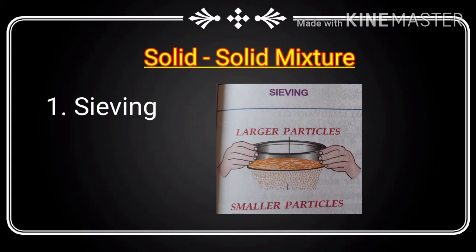The large-sized particles are separated from the fine particles by passing the mixture through a sieve. A sieve has a wooden frame with a metal mesh at its base. The mixture is added from the top of the sieve; larger particles stay above and fine particles collect below when the sieve is shaken. For example, separation of rice powder from soil.